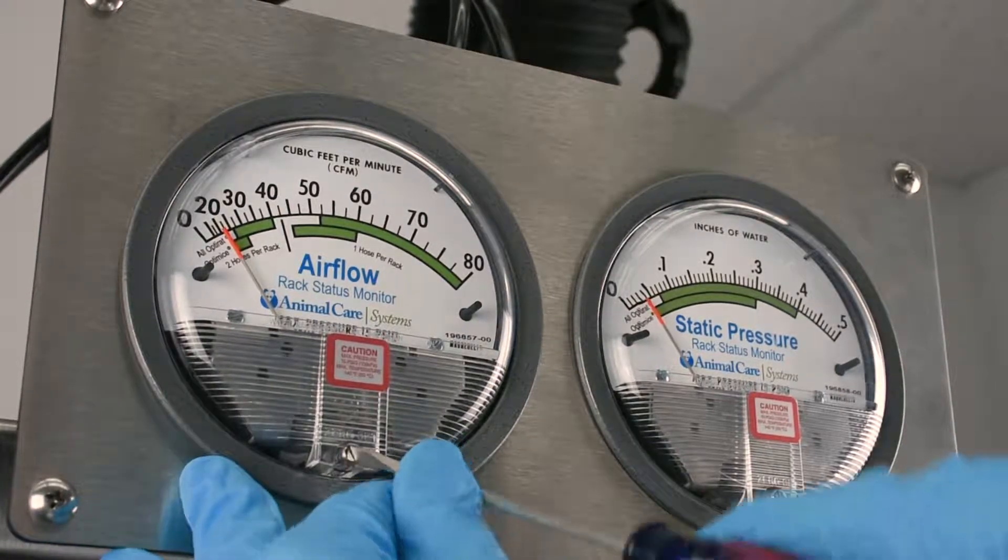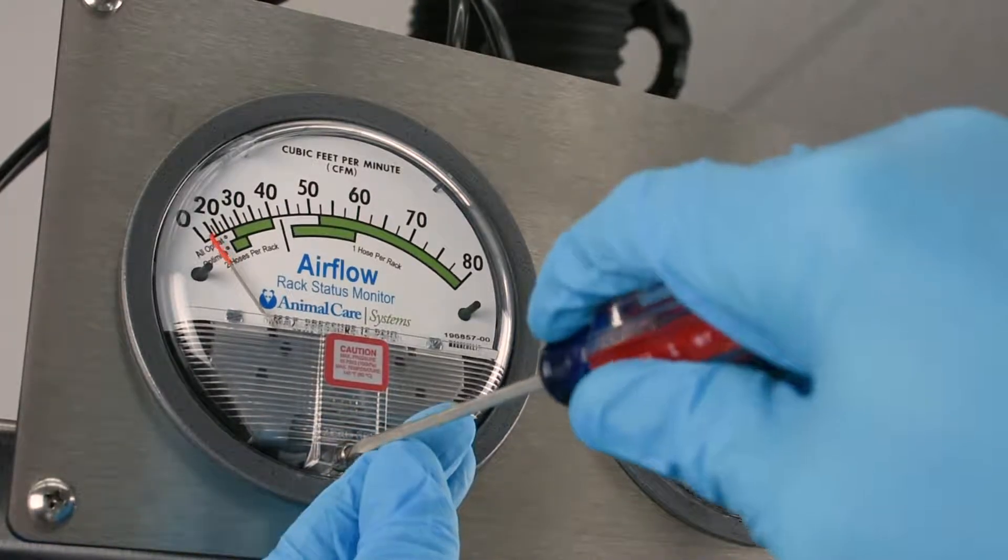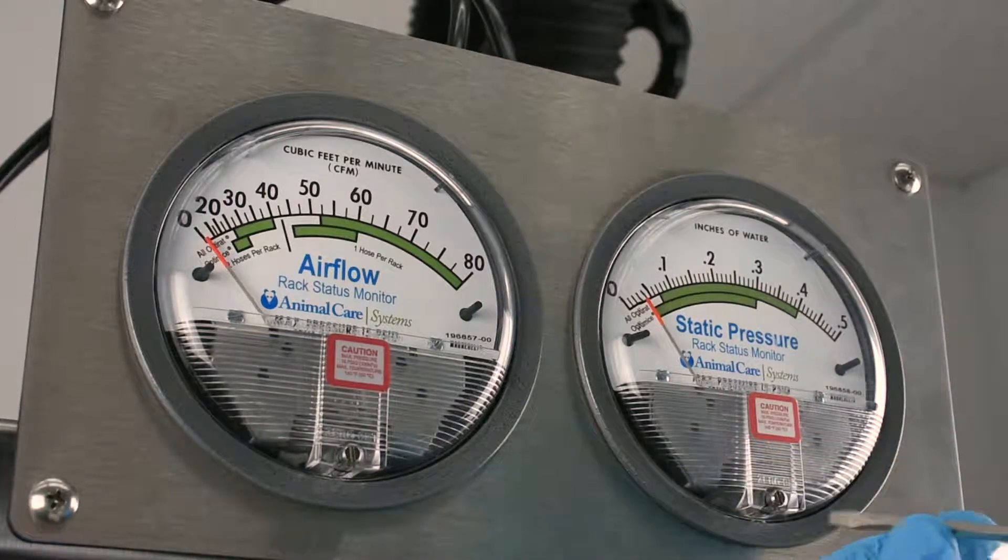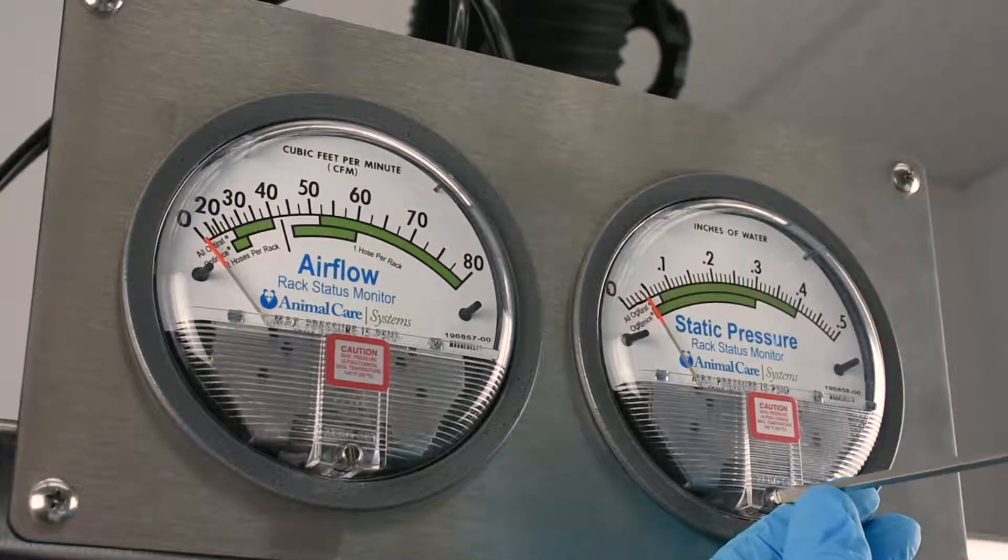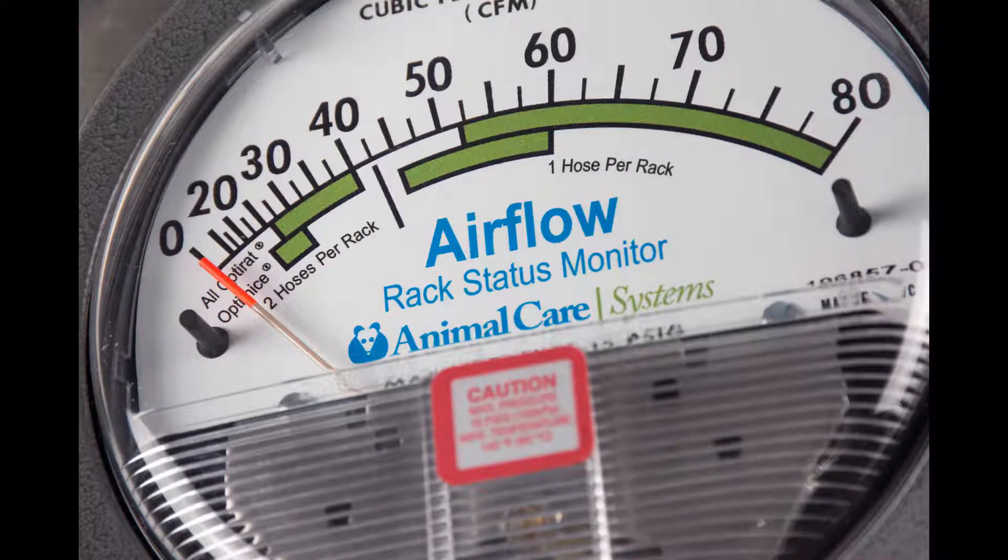Zero the gauges using a small flat head screwdriver by turning it counterclockwise. If the needle is to the left of zero, turn the screw clockwise for fine tuning. Take an appropriate angle for precise zeroing. Follow the information on the gauge faces carefully. Stay within the green parameters for the specified setup.